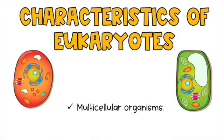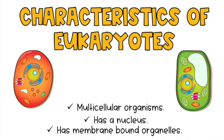Let's go over the characteristics. Multicellular — so if it has two or more cells, we're looking at a eukaryotic organism. They have a nucleus, which is the brain of the cell. You can see it — it looks like an eye. They also have membrane-bound organelles, with a membrane creating a separation between the inside of the organelle and the outside where the cytoplasm is.